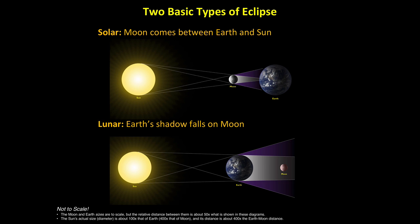These diagrams also show you why you are much more likely to see a lunar eclipse than a solar eclipse, even though both occur almost equally often. Because the Moon is much smaller than Earth, the Moon's full shadow, or umbra, traces only a narrow path of totality. As a result, very few people are in the right place to see any particular total solar eclipse. On average, a given location will have a total solar eclipse only about once every 375 years, though there is great variation from place to place.